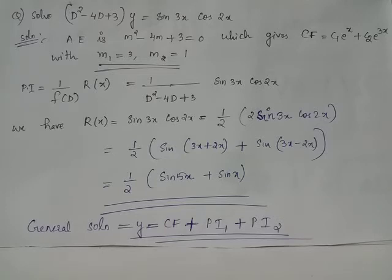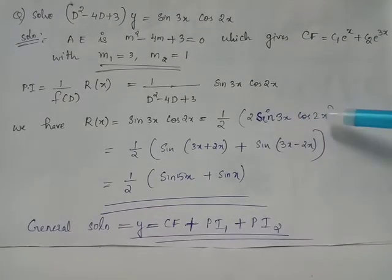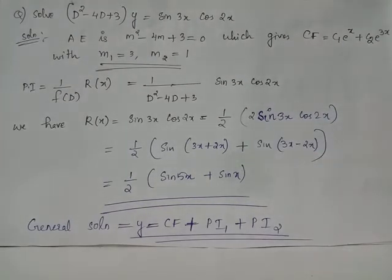Since we have a non-homogeneous differential equation with r(x) = sin3x·cos2x, we apply the trigonometric identity 2·sinA·cosB = sin(A+B) + sin(A-B). Rewriting, 2·sin3x·cos2x = sin5x + sinx. Hence r(x) = (1/2)(sin5x + sinx).